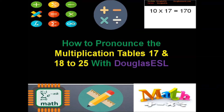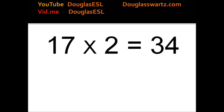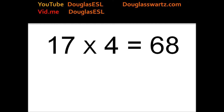How to Pronounce the Multiplication Tables 17 and 18 to 25 with Douglas ESL. 17 times 1 equals 17. 17 times 2 equals 34. 17 times 3 equals 51. 17 times 4 equals 68. 17 times 5 equals 85.